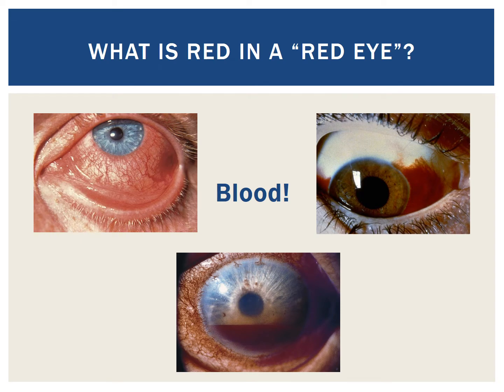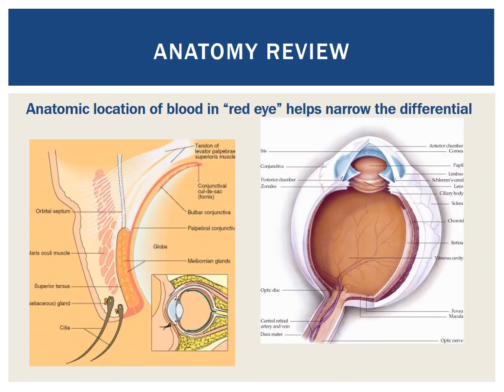Not surprisingly, blood is responsible for the redness in all red eyes. The distribution of blood is different in these three pictures, and being able to better characterize these differences is an important step when forming a differential diagnosis for patients with red eye. Before moving further, it will be useful to quickly review some basic anatomy, as understanding the anatomy of the eye is essential to understanding the possible etiologies of a red eye.